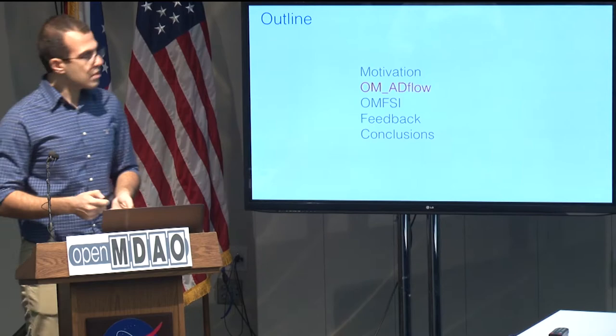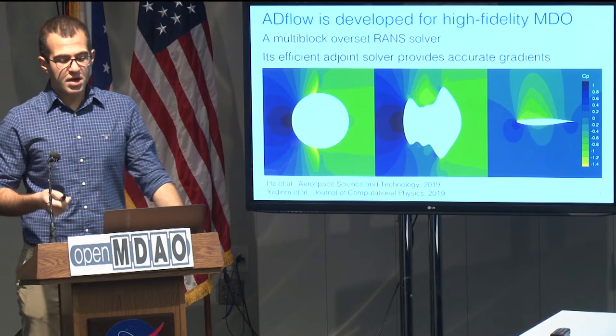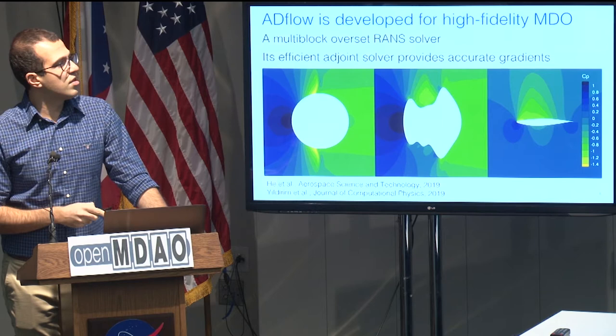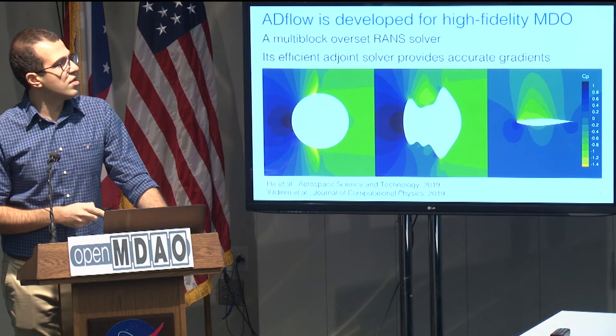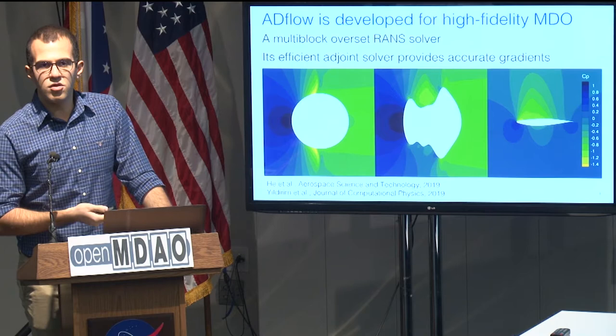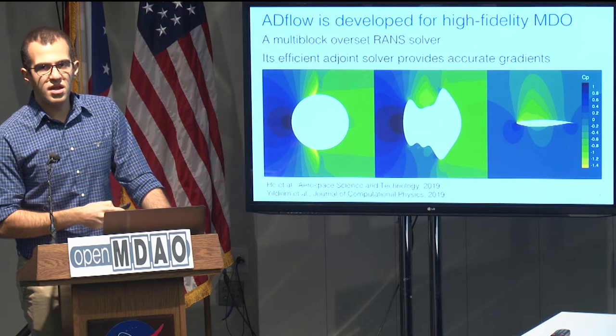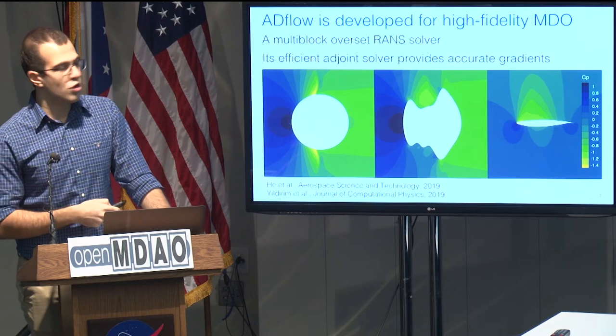We're using ADflow, our CFD solver, which we've developed for high-fidelity MDO. It's a multi-block RANS overset solver, and its efficient adjoint solver provides accurate gradients. Here you're seeing an optimization that starts from a circle and then converges to a supercritical airfoil. What most people expect is that the optimizer will gradually shrink the design, but what really happens is that you have to go through intermediate infeasible designs, and your CFD needs to be able to converge those if you really want a push-button solution in MDO. That's why we tuned our solver to be extremely robust.